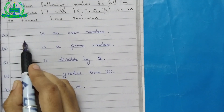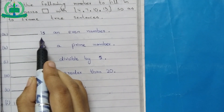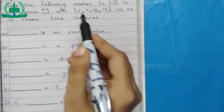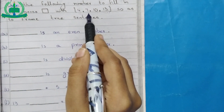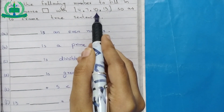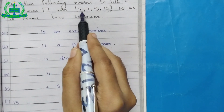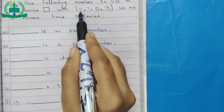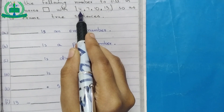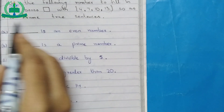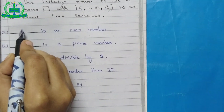A: A dash is an even number. From the options 4, 7, 10, 13 — 4 is an even number, so it is a true sentence. So we write 4.